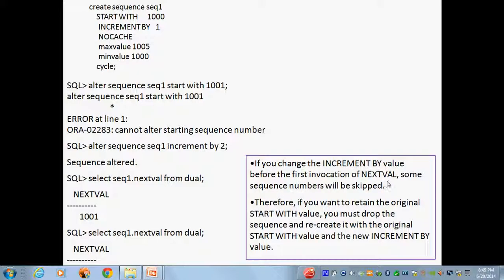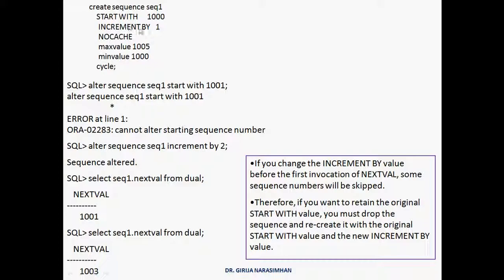It changed the increment by value before first invocation. Some sequence numbers will be skipped. That is, the start value is skipped here. Starting with 1001 and 1003 like that. Next value if I give, it gives 1003. You see, because I am incrementing by what? Incremented by 2. I altered, incremented by 2. That's why after 1001, what is coming? 1003 is coming.